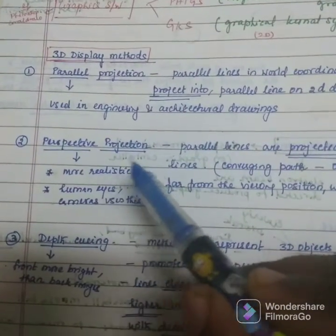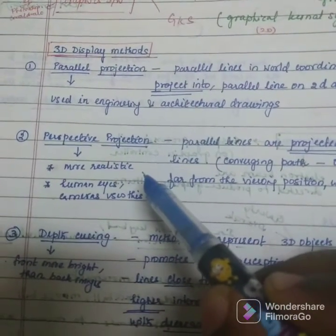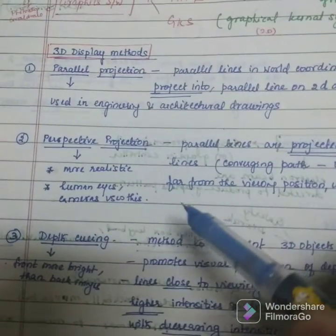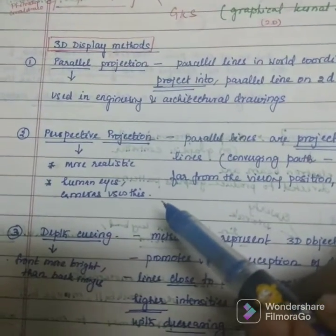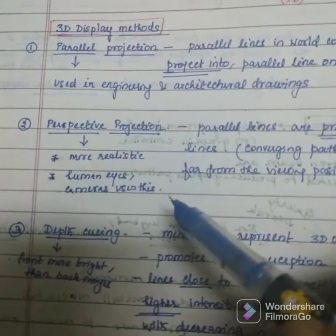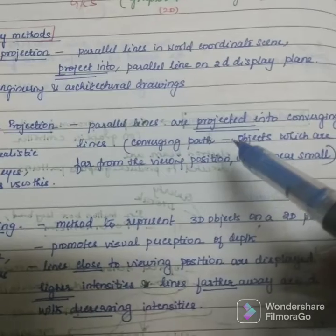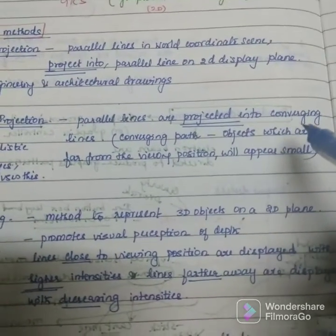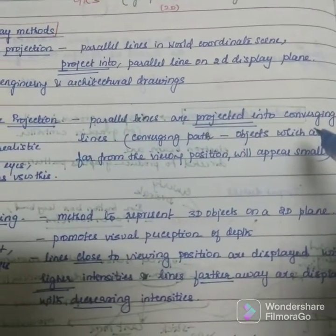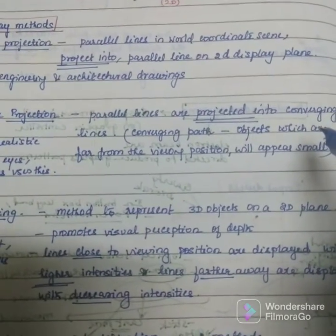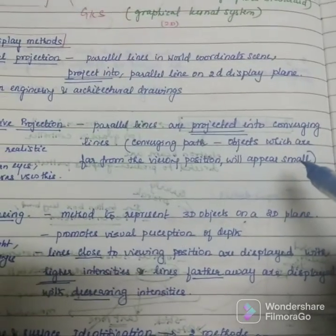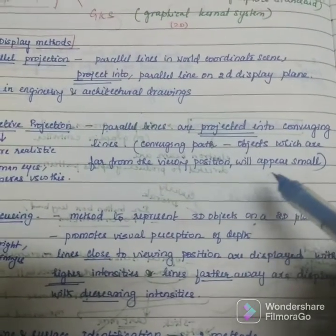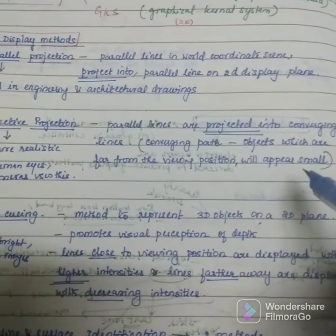Perspective projection. It is more realistic than parallel. Parallel lines are projected into converging lines. That is, objects which are far away will appear small.